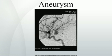An aneurysm is a localized, blood-filled balloon-like bulge in the wall of a blood vessel. Aneurysms can occur in any blood vessel, with examples including aneurysms of the circle of Willis in the brain, aortic aneurysms affecting the thoracic aorta, and abdominal aortic aneurysms. Aneurysms can also occur within the heart itself.